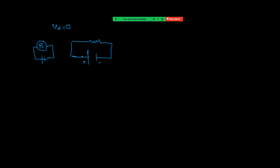We take the assumption that the connecting wires have no resistance. So points O1 and O2 are at the same potential, and points O3 and O4 are at the same potential, because the connecting wires have no resistance.